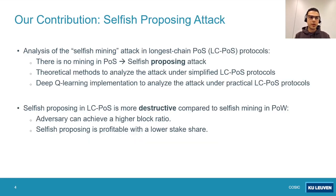In the context of proof of stake, the longest chain fork choice rule means that once a proposer is selected to propose a block in a specific slot, the proposer should always propose on top of the longest chain available in their view. The attack we discuss in this presentation can be applied to LCPOS protocols. Since there is no mining in proof of stake, we use the term selfish proposing rather than selfish mining.